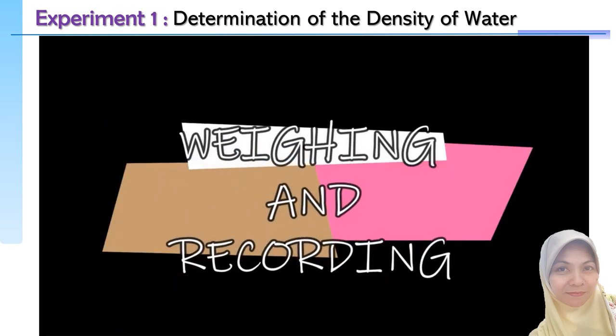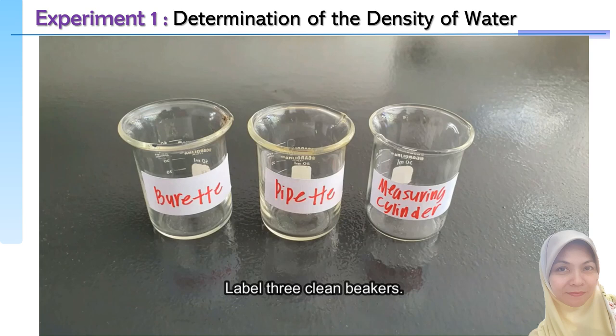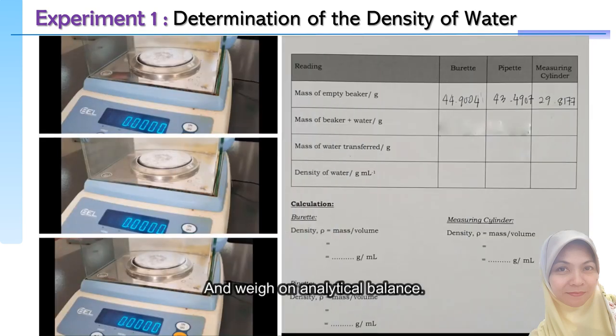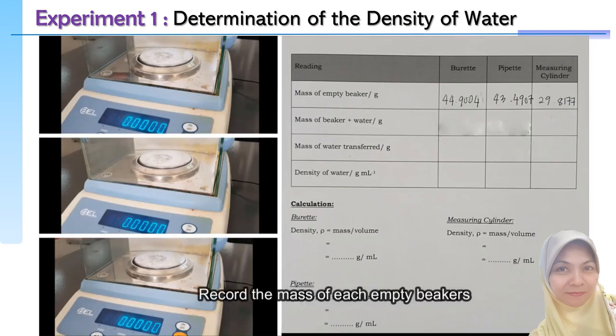Weighing and recording: label 3 clean beakers and weigh them on an analytical balance. Record the mass of each empty beaker.